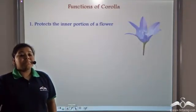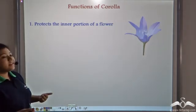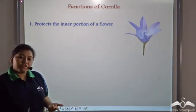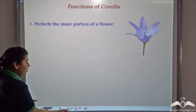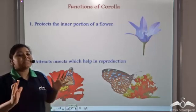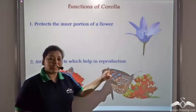So, the main function of corolla is to protect the inner portions or the male parts and the female parts of the flower, and the second function of a corolla is to attract insects by its vibrant colors that help in reproduction.